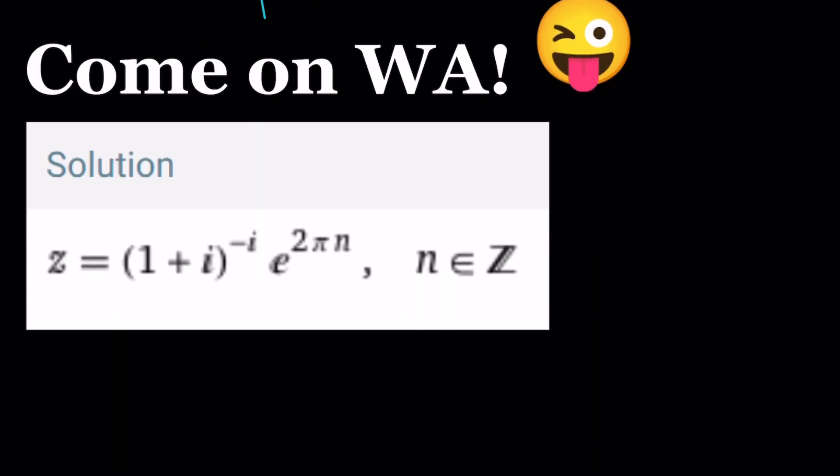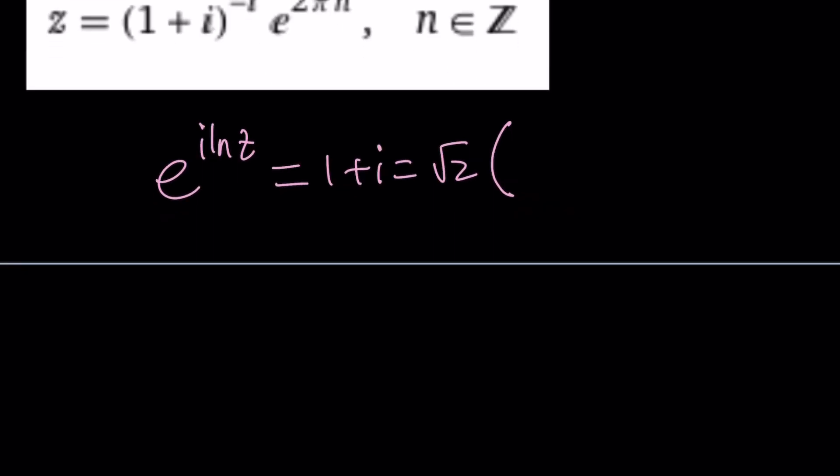And on the left hand side we have e to the power i ln z. That's equal to 1 plus i which can be written as square root of 2 times, now we're supposed to write e to the power something right.